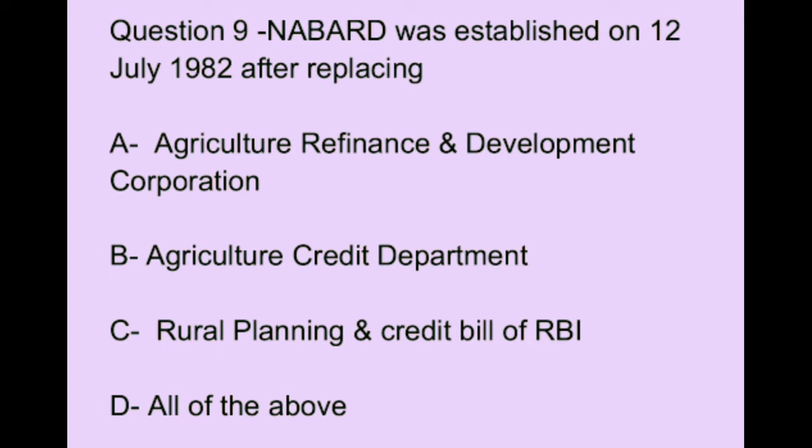Question number 9. NABARD was established on 12th July 1982 after replacing: Option A: Agriculture Refinance and Development Corporation. Option B: Agriculture Credit Department. Option C: Rural Planning and Credit Cell of RBI. Option D: all of the above. The correct answer is option D, which is all of the above.